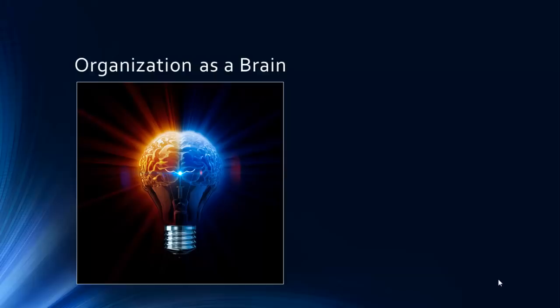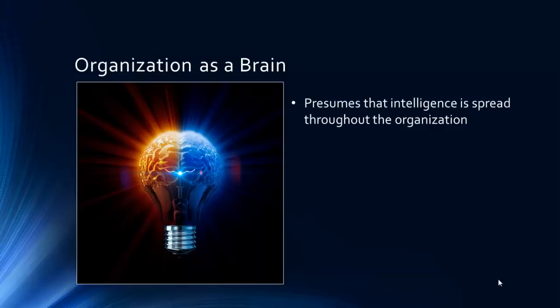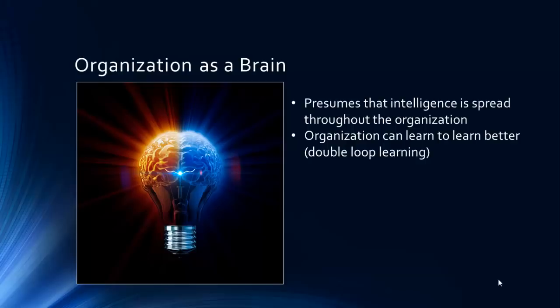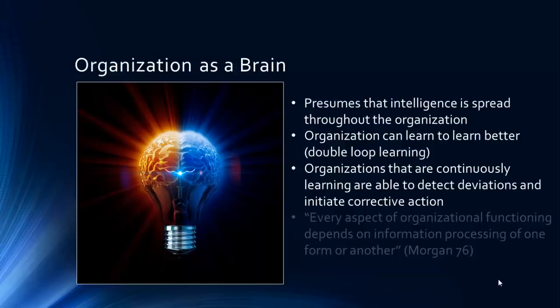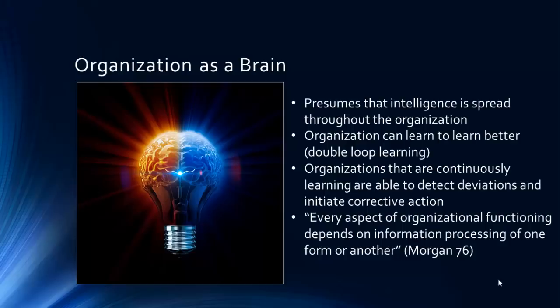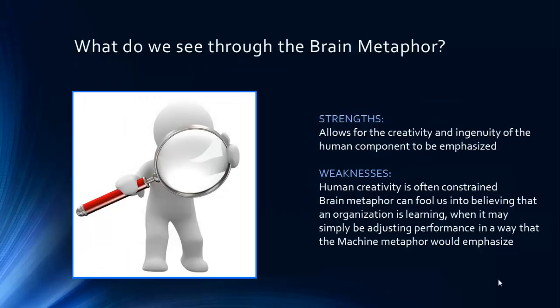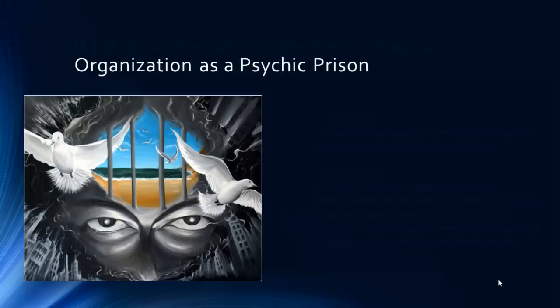The brain metaphor presumes that intelligence is spread throughout the organization, similar to a holograph in which any part can reproduce the whole. The organization can learn to learn better, which is referred to as double-loop learning. The brain metaphor reminds us that organizations that are continuously learning are able to detect deviations from standards and initiate corrective action. Morgan asserts that every aspect of organizational functioning depends on information processing of one form or another. The brain metaphor allows for creativity and ingenuity of the human component to be emphasized. However, the reality in many organizations is that human creativity is constrained, so this metaphor can fool us into believing that an organization is learning and thriving when it may simply be adjusting performance in a way that the machine metaphor would also emphasize.